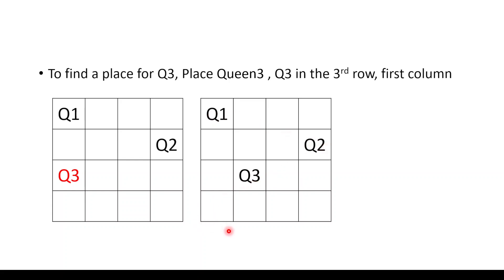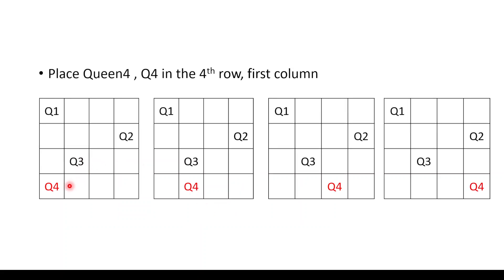With one queen left, we place Q4 in the fourth row. Column 1: Q1 and Q4 are in the same column — invalid. Column 2: Q3 and Q4 are in the same column — invalid. Column 3: Q3 and Q4 are on the same diagonal — invalid. Column 4: Q2 and Q4 are in the same column — invalid. None of the columns in the fourth row is a valid position for Q4.